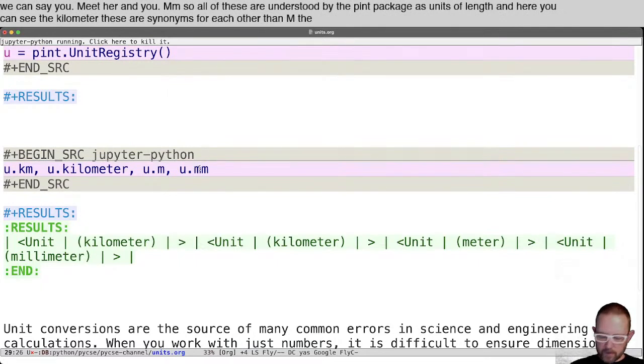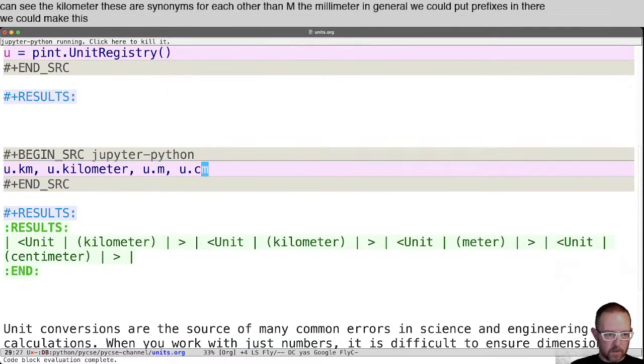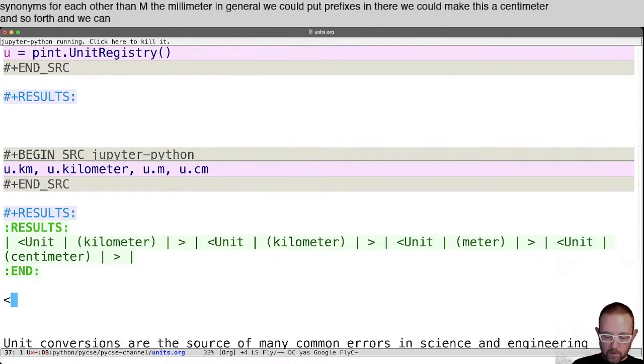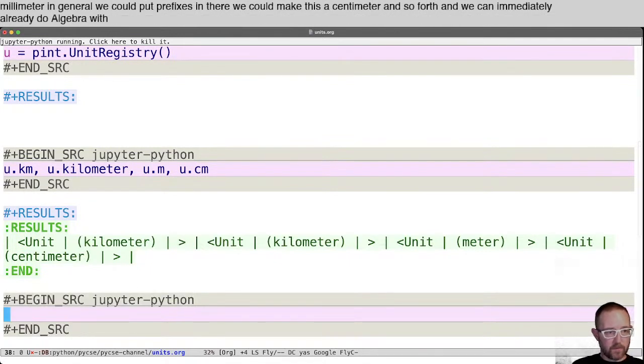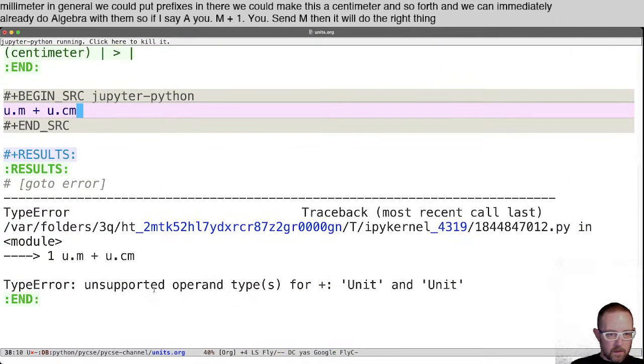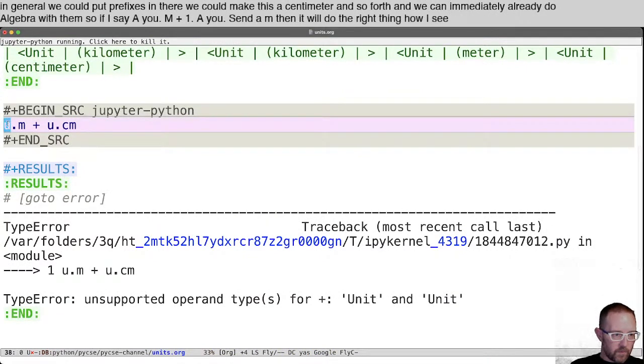In general, we could put prefixes in there, we could make this a centimeter, and so forth. And we can immediately already do algebra with them. So if I say one u dot meter plus one dot u dot centimeter, then it will do the right thing. Oh, I see, we have to make these numbers.